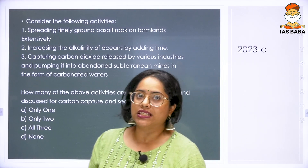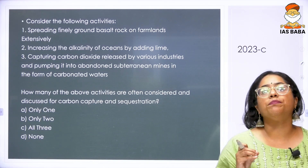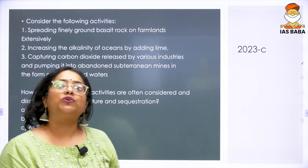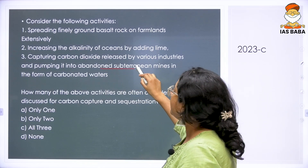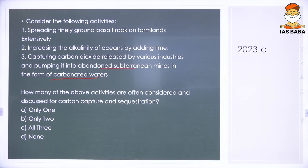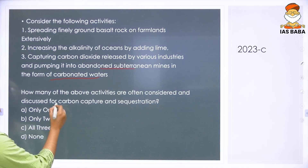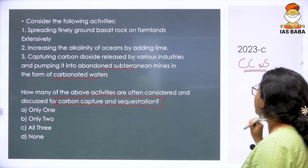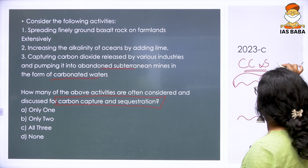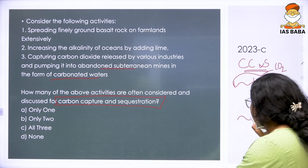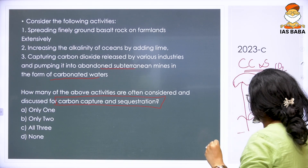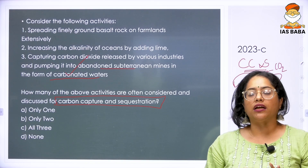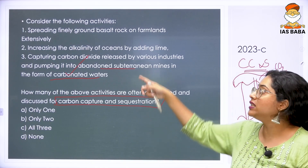Moving to a 2023 question: consider the following activities — spreading finely ground basalt rock on farmlands extensively, increasing the alkalinity of oceans by adding lime, and capturing carbon dioxide released by industries and pumping it into abandoned subterranean mines in the form of carbonated waters. Carbon capture and sequestration is a process where CO₂ in the atmosphere is captured and stored. The last option — capturing CO₂ and pumping it into subterranean areas like unused coal or oil mines — clearly fits.